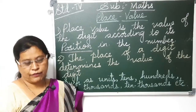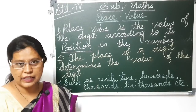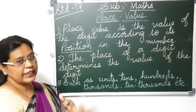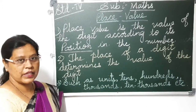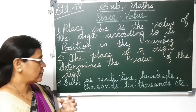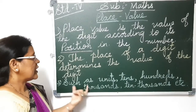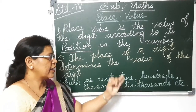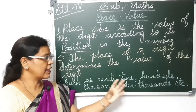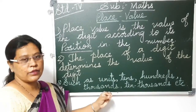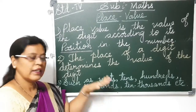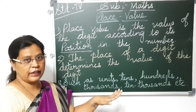Now in our fourth standard we are going to learn 4 and 5 digit numbers, because in your third standard you had learned the 3 digit numbers. Now you are in fourth standard so you have to learn 4 and 5 digit numbers, up to 10,000. Such as units, tens, hundreds, thousands and 10,000 — these 5 place values you are going to learn.